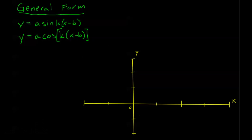So first example. This example is y equals 2 plus 3 sine of pi minus 2x. I'm trying to include everything in this one, and I haven't given it to you in just the right form. We need to get this into our general form before we can really do anything here.